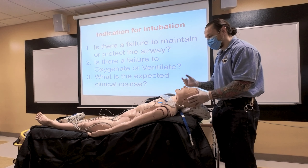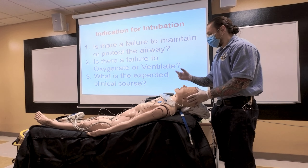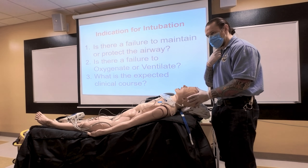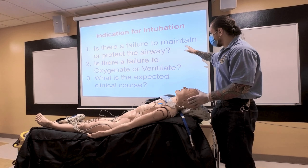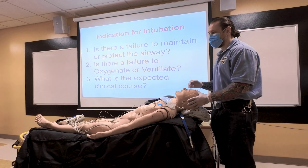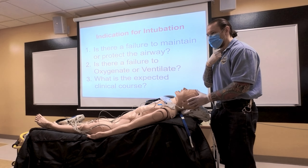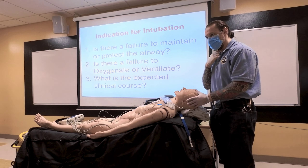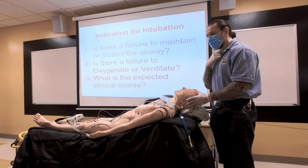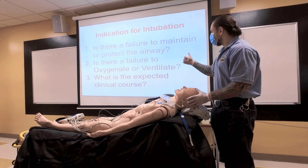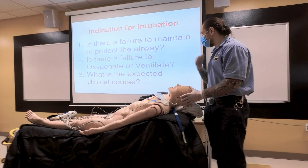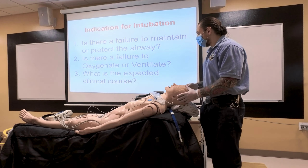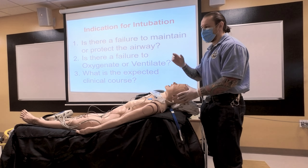We're going to talk about indications — why are we going to do this? The patient has a failure to maintain or protect the airway. How do I know a patient can maintain a proper airway? If the patient is able to swallow and the patient is alert. If the patient cannot do those things, we say they have a probable potential of airway compromise. If I ask the patient their name and they're able to phonate, make sound, and swallow, I know they have protective reflexes. If the patient cannot maintain the airway, they also cannot protect it.